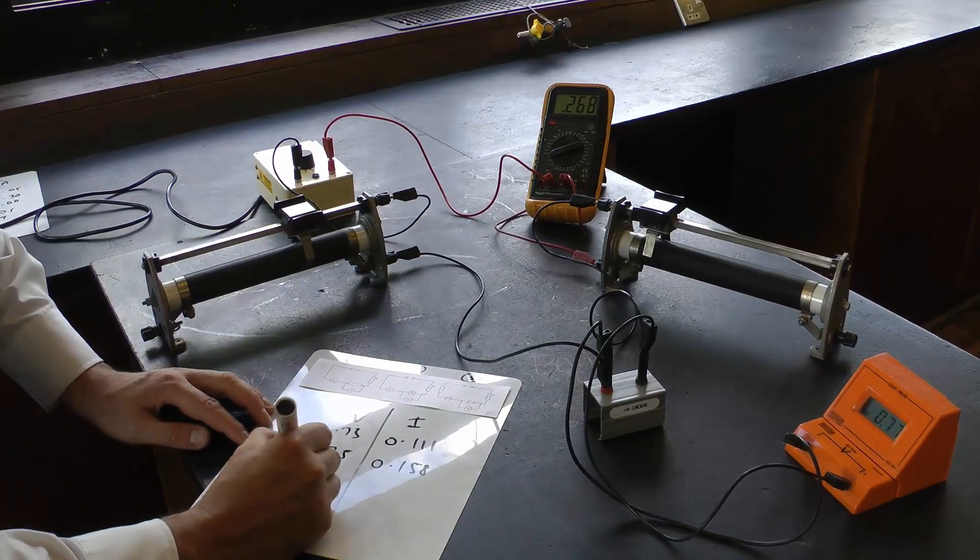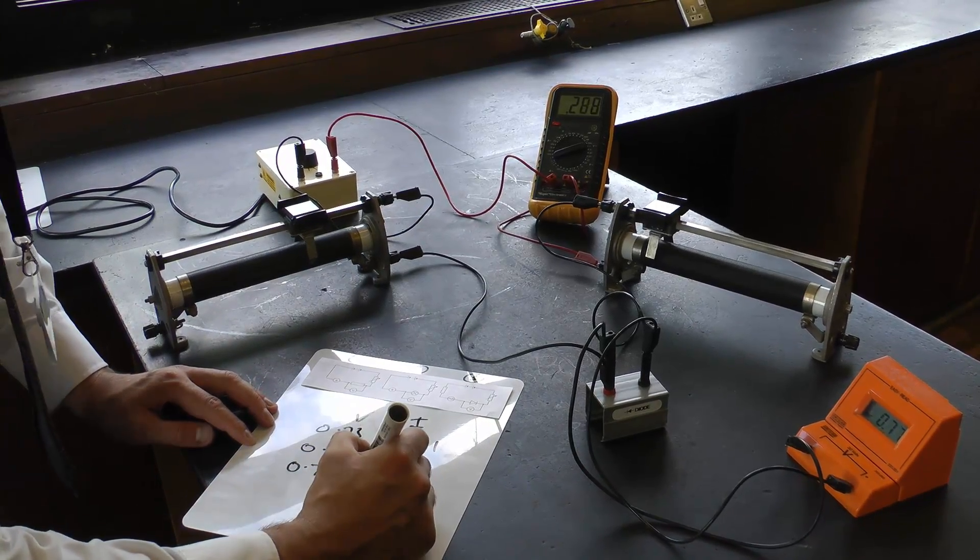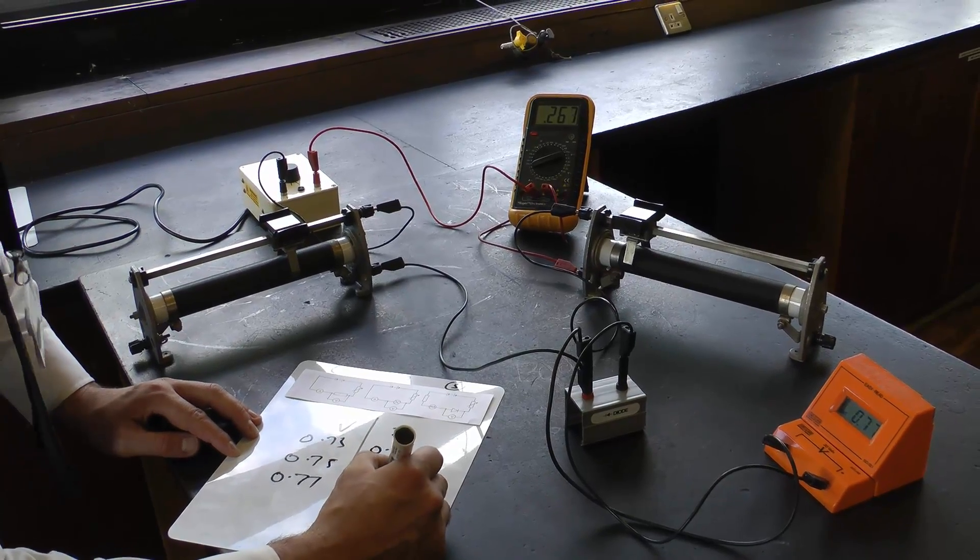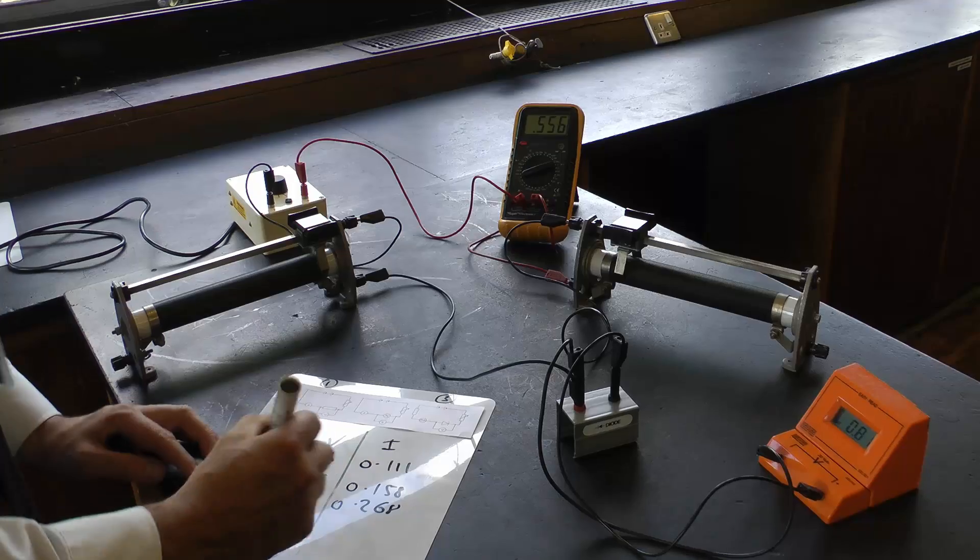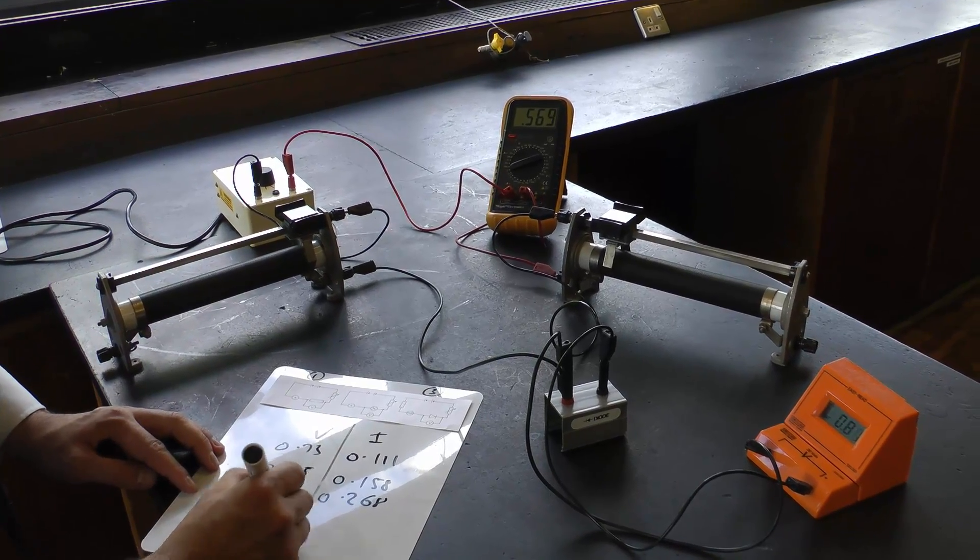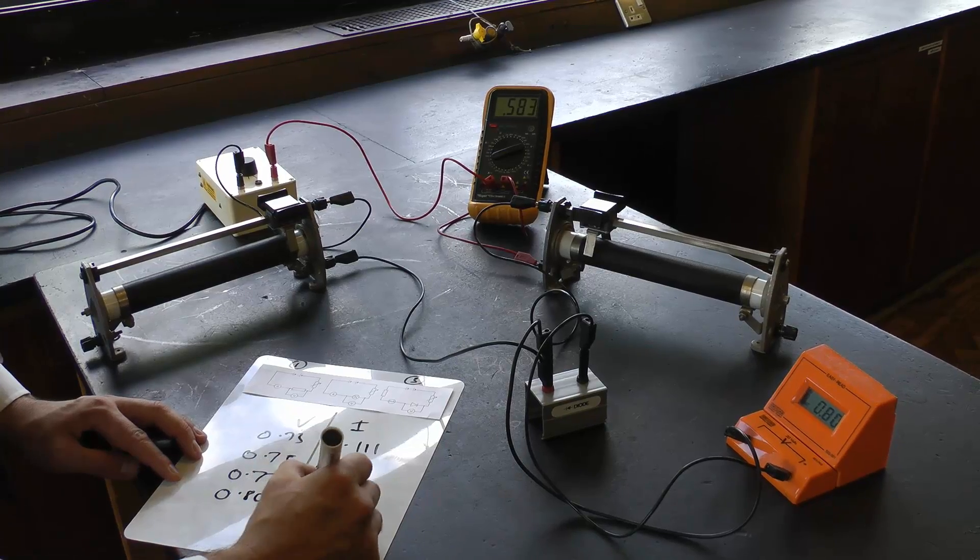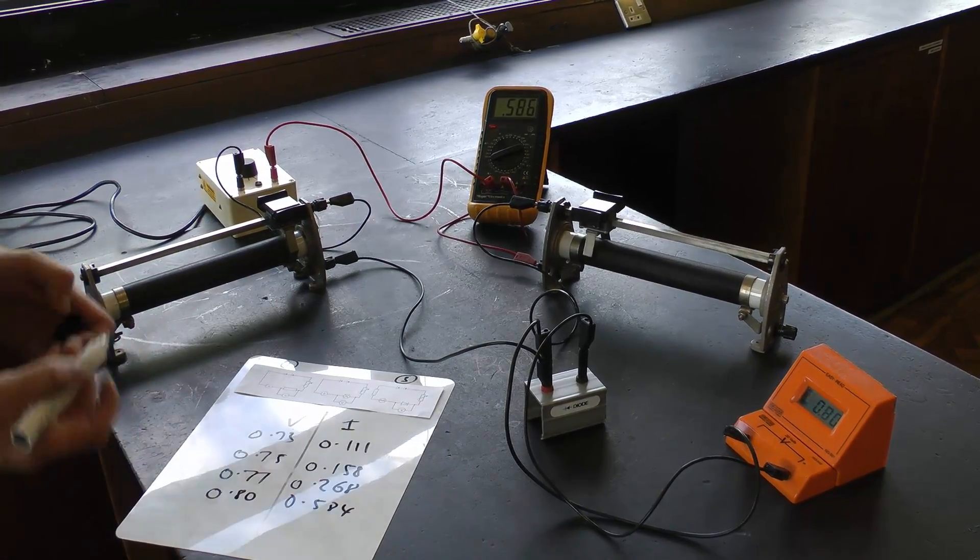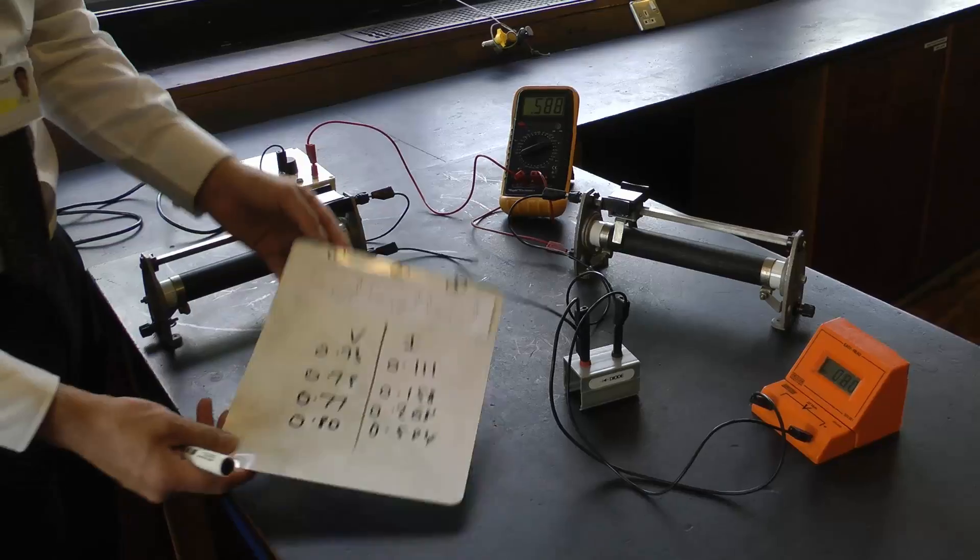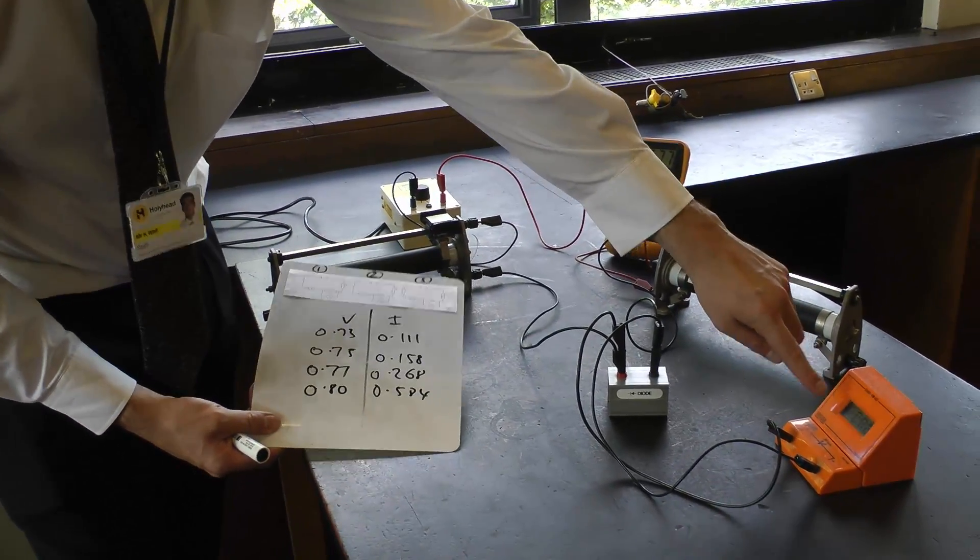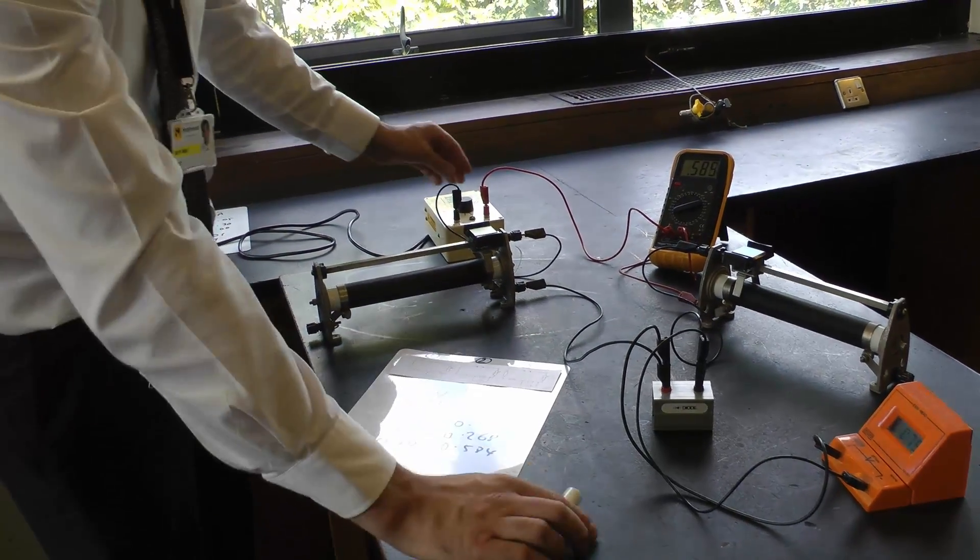0.77 volts gives me a current of 0.268 amps. And I'll go for one last one: 0.80 volts gives me a current of 0.584 amps. So I've actually managed to get four readings here. I'd ideally try and get more than that, so you want to fiddle with this until you get as many graduations as you can.